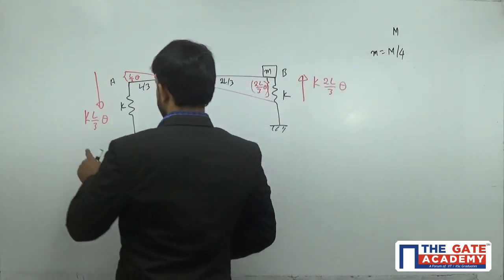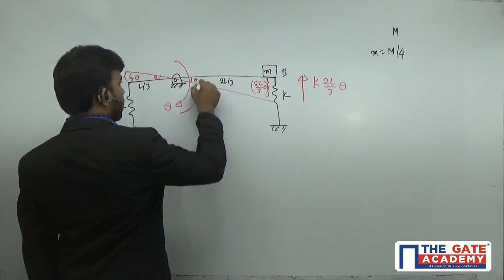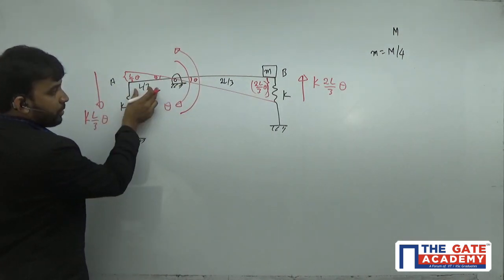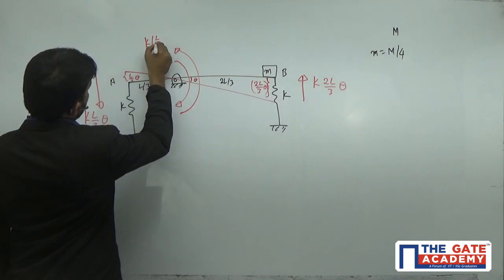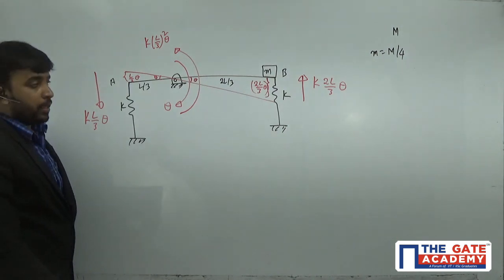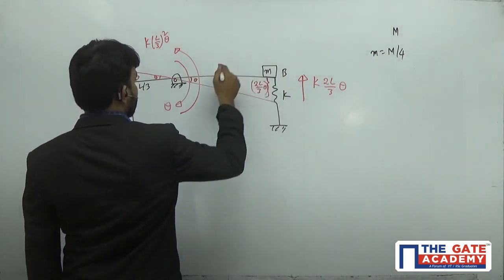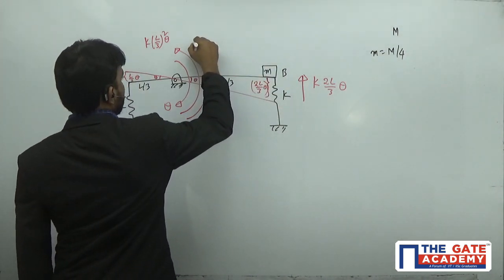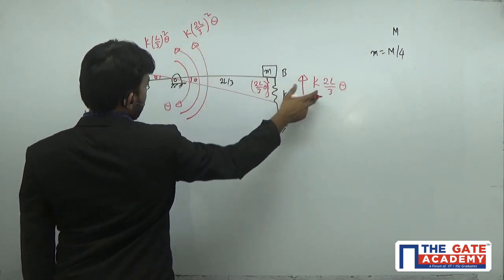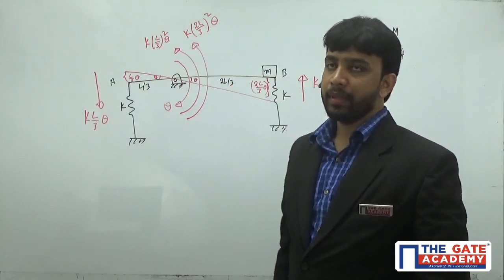Due to the spring force on the L/3 side, the couple in the counterclockwise direction is K·(L/3)²·θ = KL²/9·θ. Due to the spring force on the 2L/3 side, the couple in the same direction is K·(2L/3)²·θ = 4KL²/9·θ. These are the two unbalanced external couples.